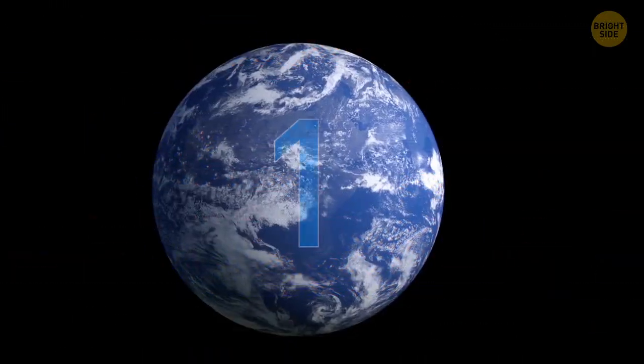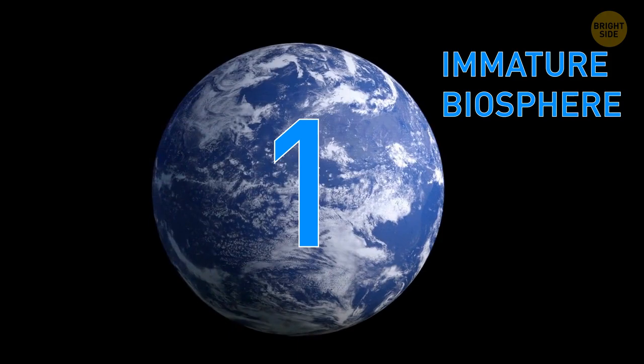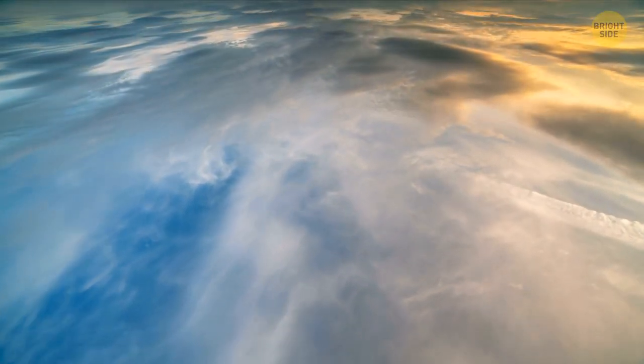The first stage is what we call the immature biosphere. It's when life first started on Earth, billions of years ago. Only microbes were there on the bare land without any vegetation. There wasn't any global feedback, which means these microbes couldn't yet affect Earth, its atmosphere, or other systems in any way.